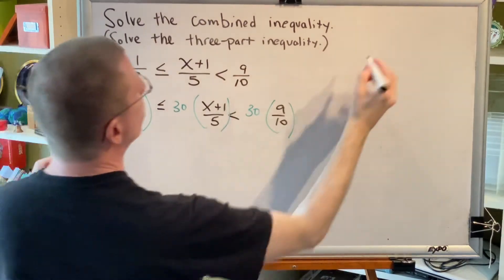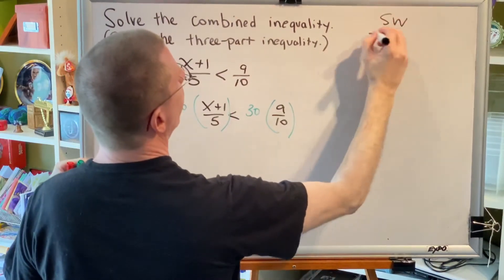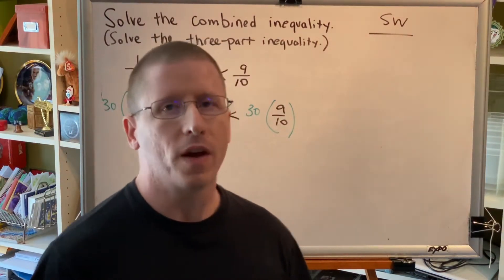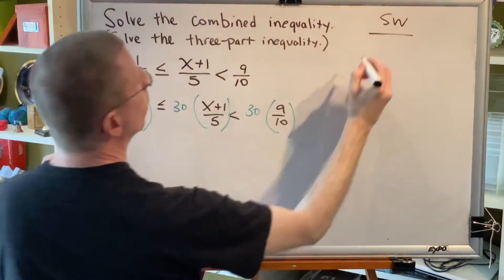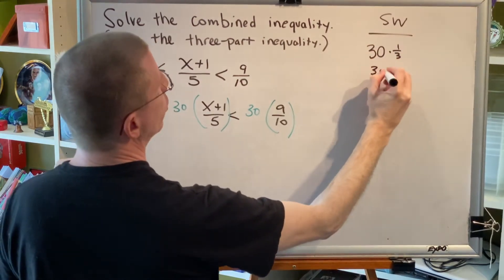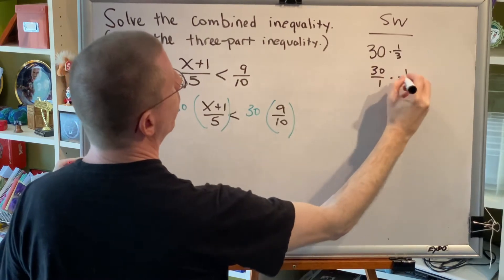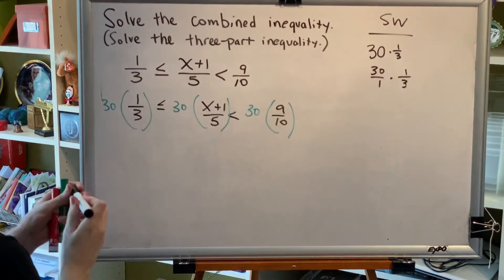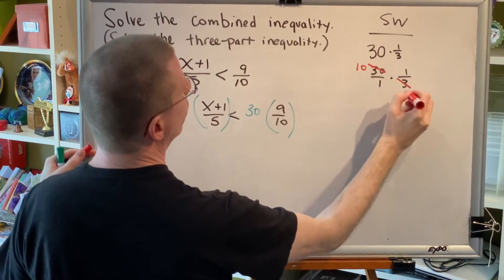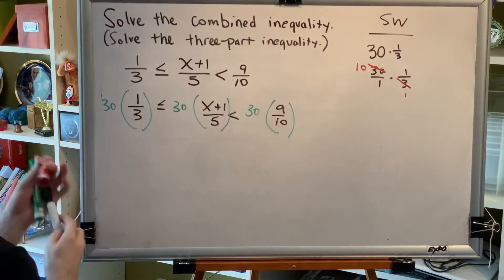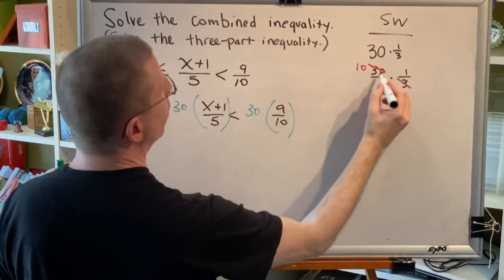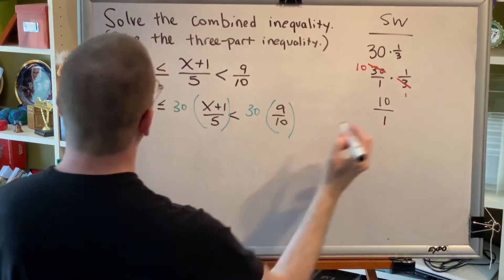Let's start with 30 times one third. Well, it's my hope that you can do that in your head. 30 times one third is the same thing as 30 divided by 3, which is 10. But let's show the fractions math anyway. 30 times one third is the same thing as 30 over 1 times 1 over 3. We notice that we have a 30 up top and a 3 down below, and 30 divided by 3 is 10, which I can write as 10 over 1. So this gives me 10 times 1 over 1 times 1, and 10 over 1 is 10.